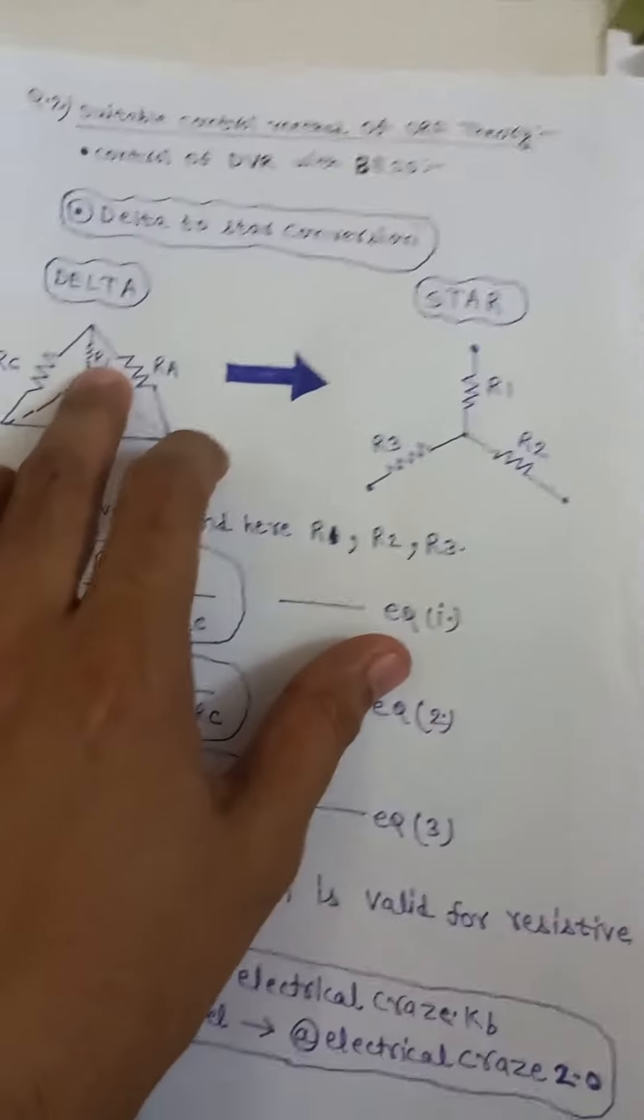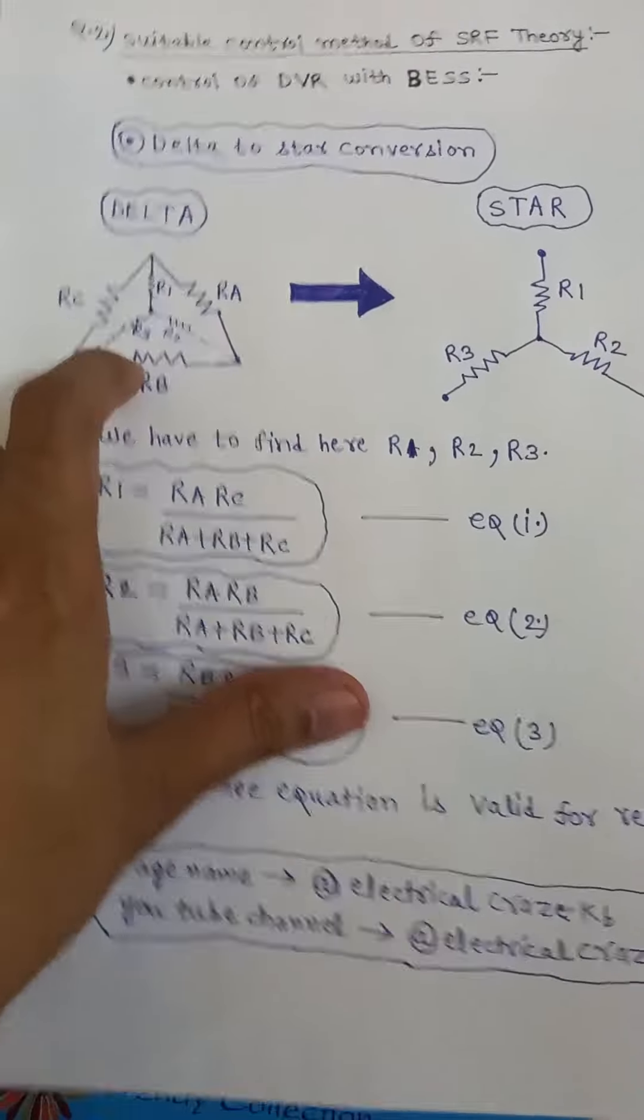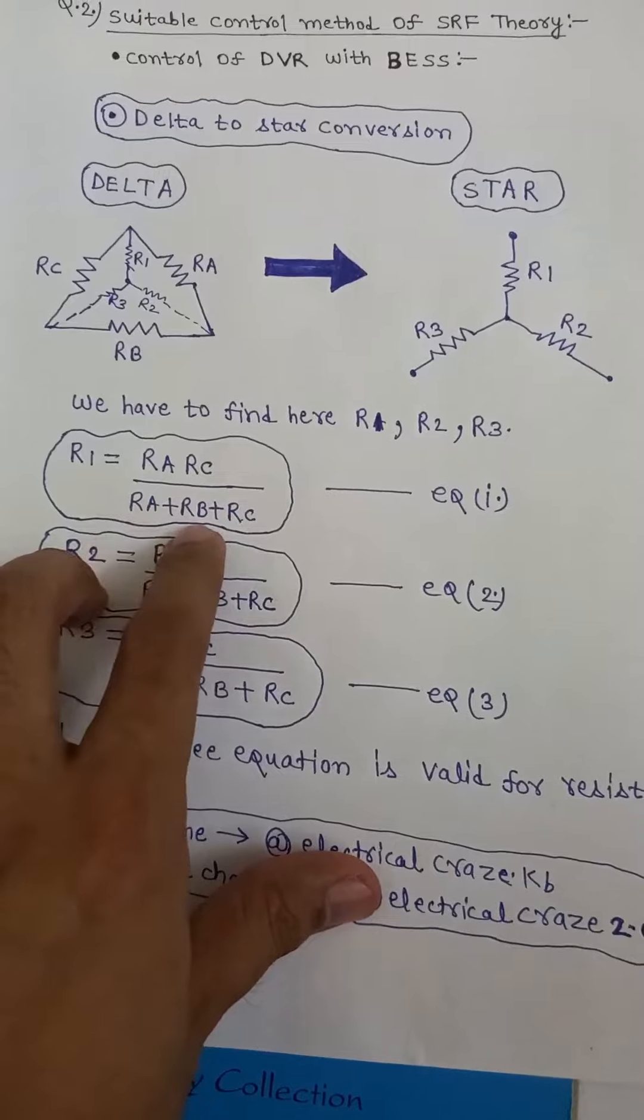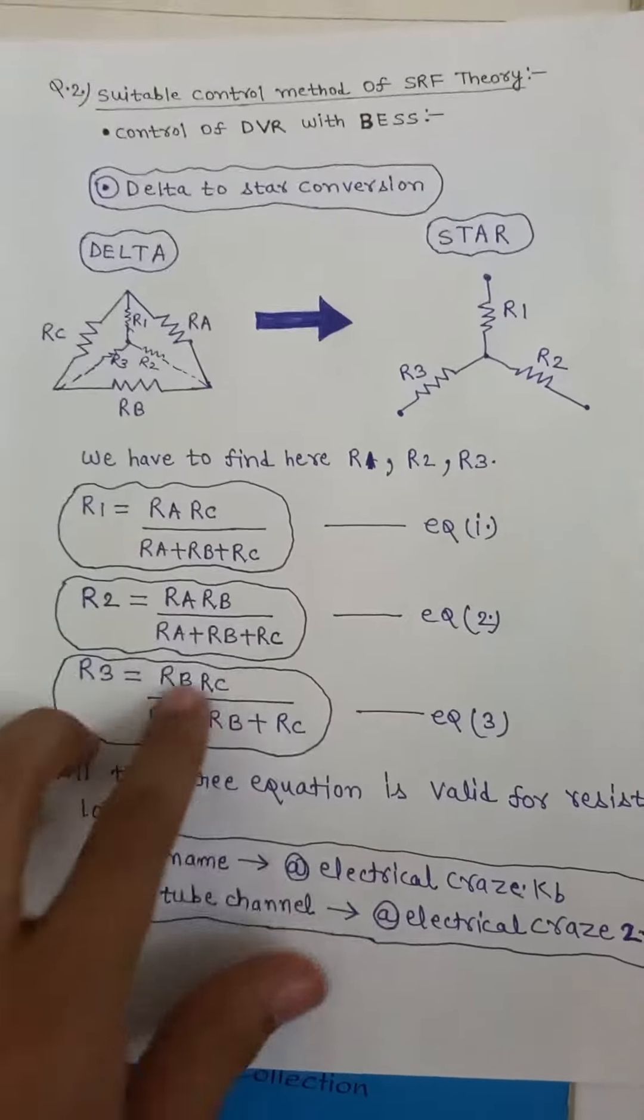R1, R2 and R3 like this. Now we have to find R1, R2 and R3. So for R1 finding or R2 finding or R3 finding, denominator is same. That is Ra plus Rb plus Rc. All three resistances combined together.